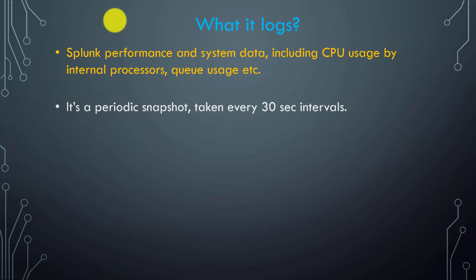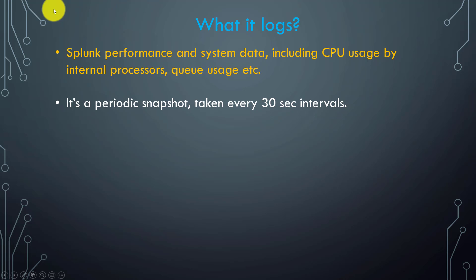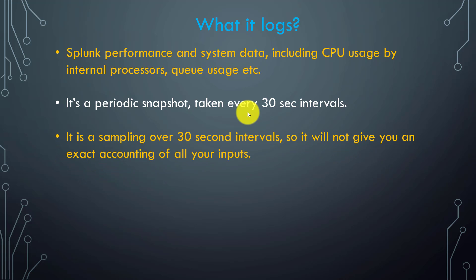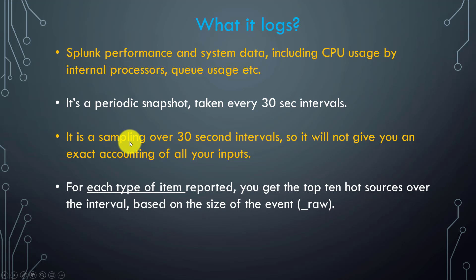One thing to understand is that matrix.log is a periodic snapshot, taken every 30 seconds. It's a sampling over 30 seconds — if there are multiple processors, the top processors consuming the most system resources are the ones logged here. By default, for each type of processor and each type of metric, it takes the top 10 hot sources.